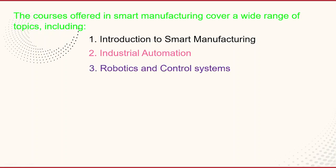The next course is robotics and control systems, which covers the design, construction, kinematics, dynamics, and programming of robots used in smart manufacturing, including collaborative robots known as cobots and autonomous mobile robots (AMRs). Next is data analytics for manufacturing, which covers the collection, analysis, and visualization of data generated in manufacturing processes, including machine learning and predictive analytics.